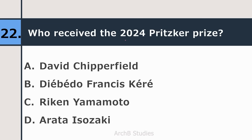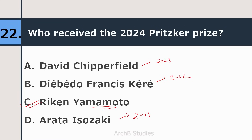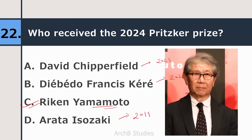Twenty-second question: who received the 2024 Pritzker Prize — David Chipperfield, Diébédo Francis Kéré, or Riken Yamamoto? The correct answer is Riken Yamamoto. David Chipperfield received it in 2023, Francis Kéré in 2022, and Arata Isozaki in 2019.